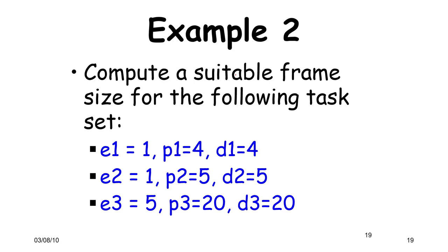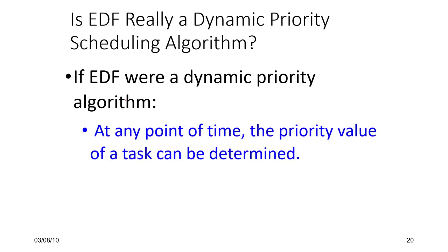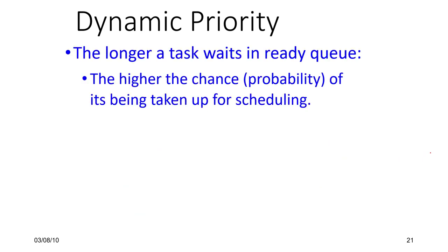EDF is a dynamic priority algorithm in the sense that you always look at the nearest deadline, and the task with the nearest deadline has the highest priority. At any point in time the priority of any task is determined by the proximity of its deadline, and this clearly changes as more tasks are added. This notion of dynamic priorities is an important aspect of EDF.